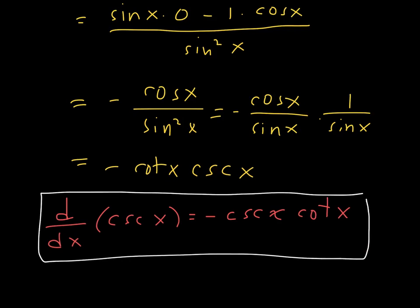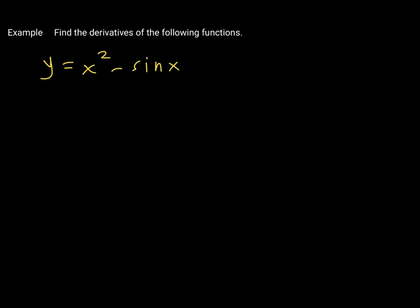We found the derivatives of all six trigonometric functions. Let's practice. Given y equals x squared minus sine of x, we find dy/dx. The derivative of x squared is 2x, and the derivative of sine of x is cosine of x. Using the difference rule, dy/dx equals 2x minus cosine of x.